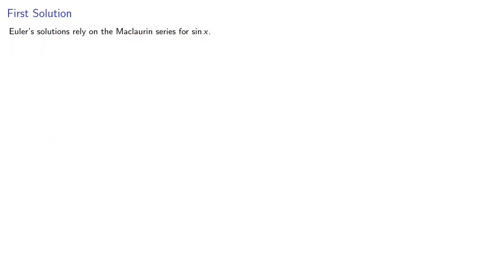Euler's solutions rely on the Maclaurin series for sine of x. Let y equal sine of x, and so we have... Now Euler didn't use the factorial notation, but we will just to simplify our expressions. Dividing by y and rearranging gives us...